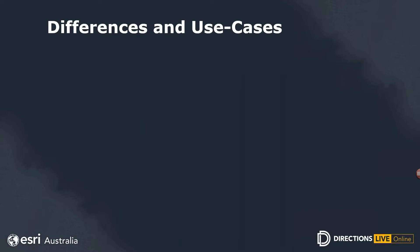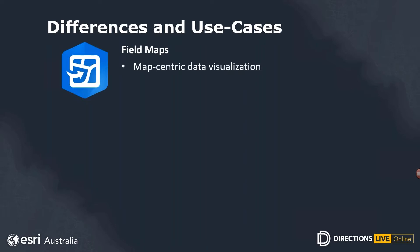We'll cover the primary differences between the three premier field data collection apps for ArcGIS. Firstly, we have Field Maps — a smartphone-based, map-centric data collection app. It is designed to replace the functionality of ArcGIS Tracker, Collector, and Explorer all in one. The replacement of these now deprecated applications is why we encourage newcomers to start with Field Maps. It streamlines workflows and having one app to install improves the life of both mobile workers and systems administrators.